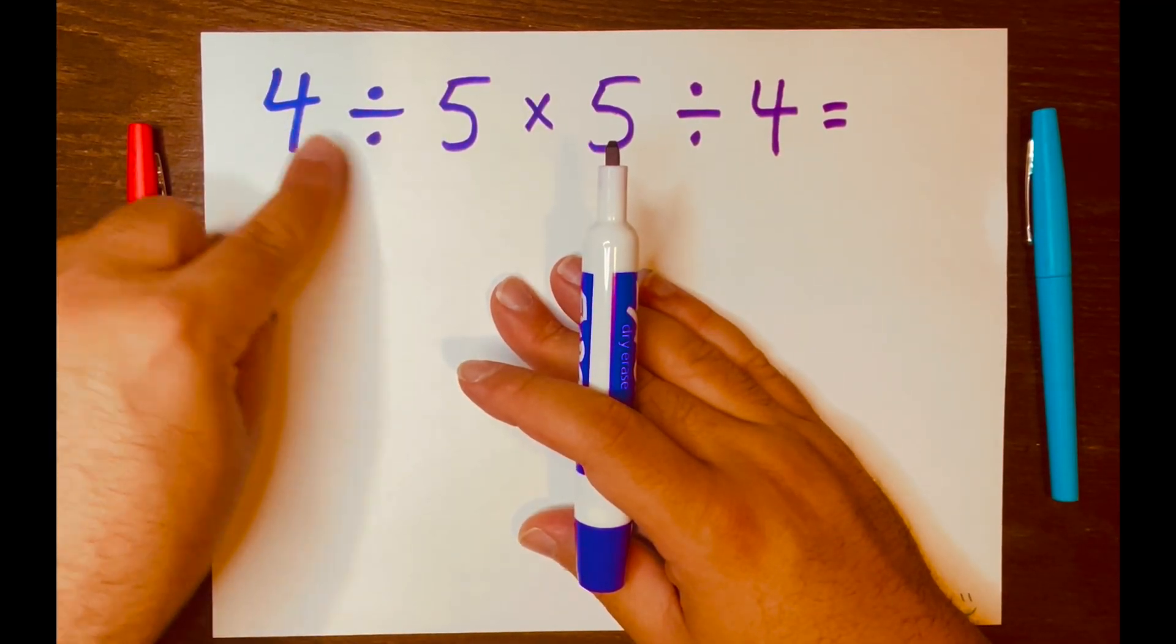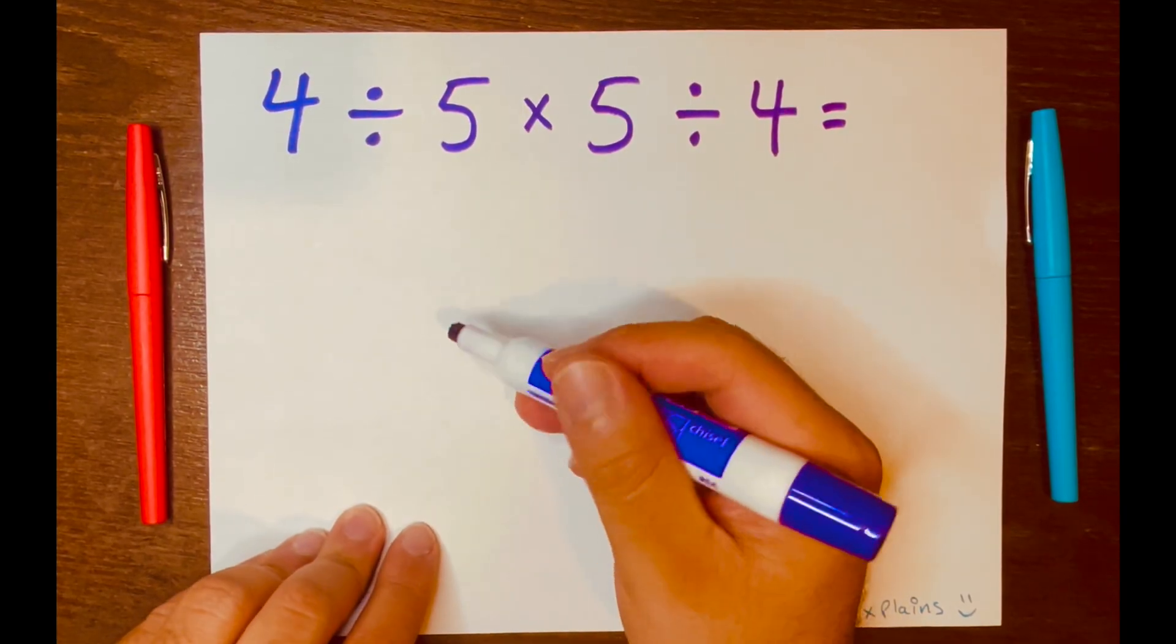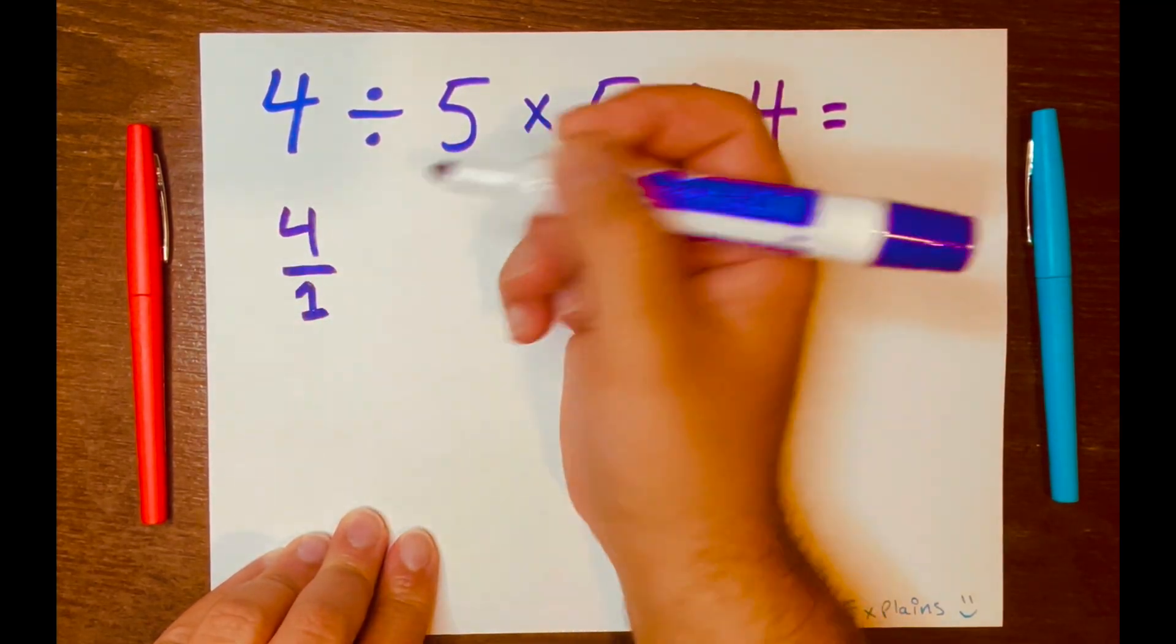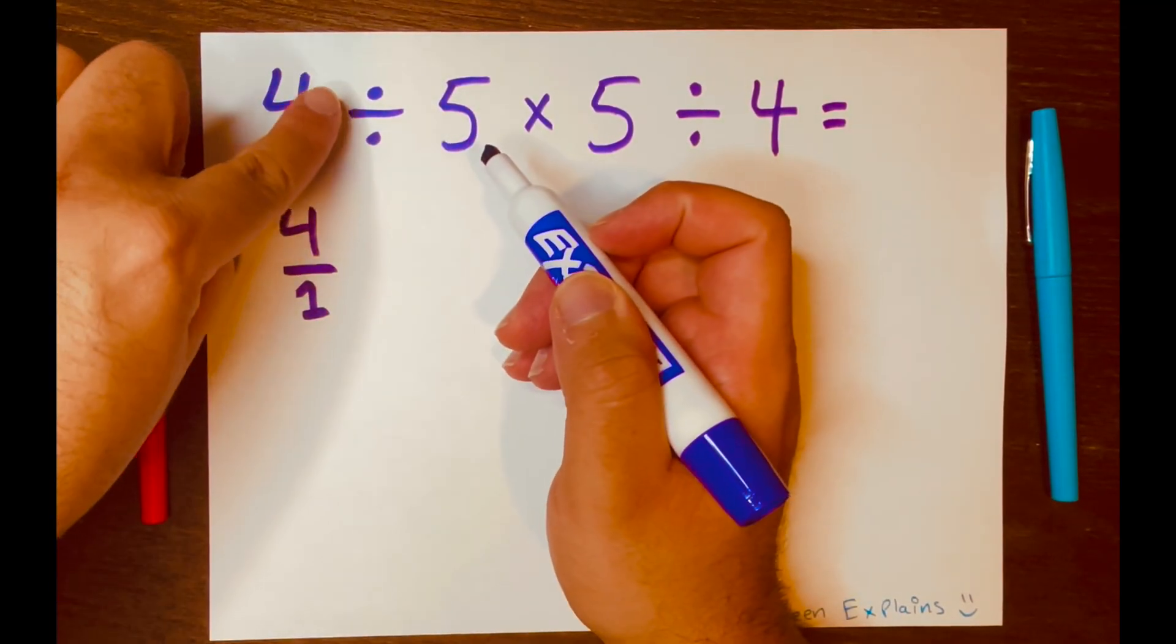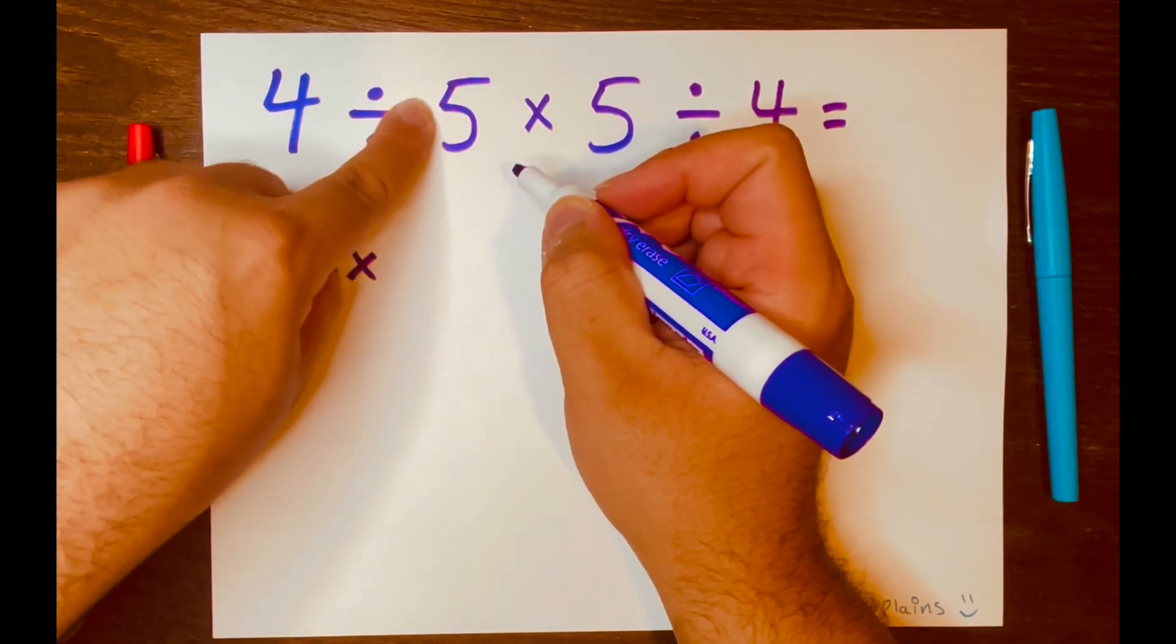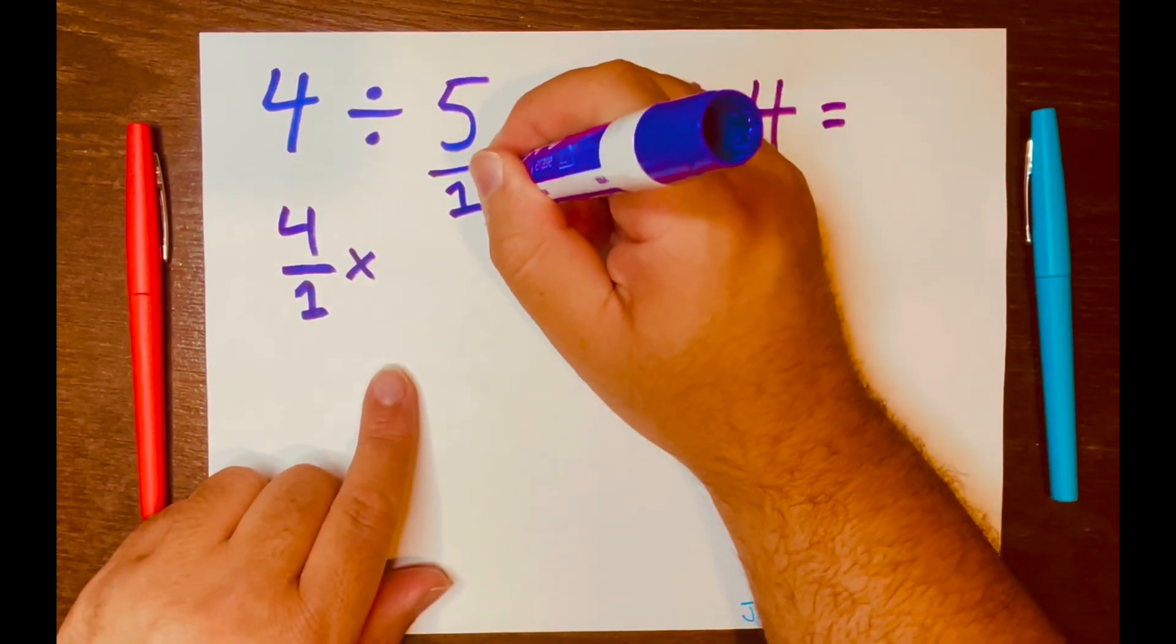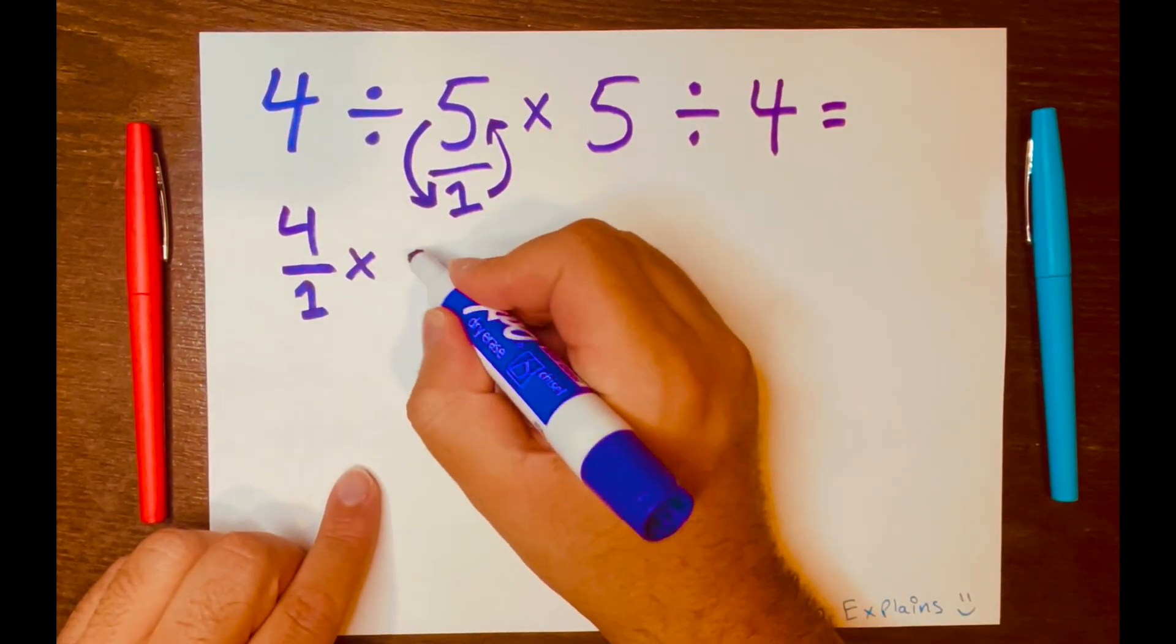Now, 4 divided by 5 will go first. And I am going to write them as a fraction. So 4 over 1 is the same as 4. And then I'm going to change the division symbol to multiplication, and then I am going to turn this 5 into a fraction, like this, and I'm going to flip it. So the 1 will go on top of the fraction, and the 5 will go at the bottom of the fraction. So it'll be written like this, 1 over 5.